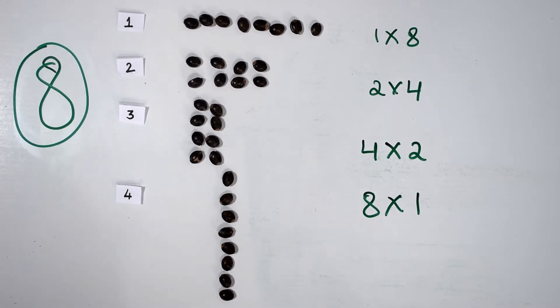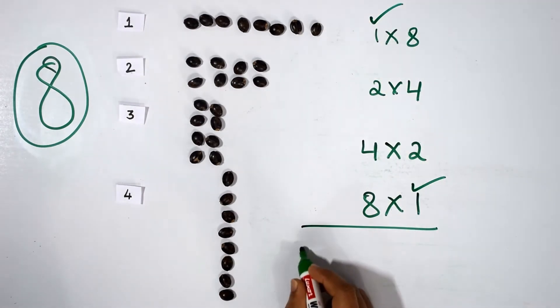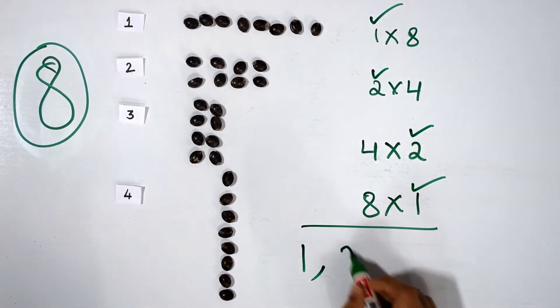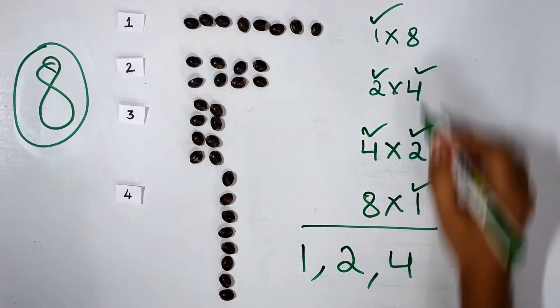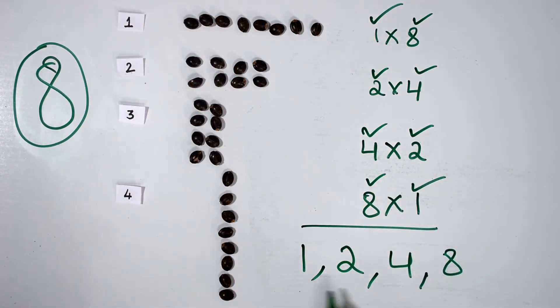While arranging eight in different ways, what Durga actually found out were factors of eight, which are one, two, four, and eight. Writing them in ascending order: one, two, four, and eight are the factors of eight.